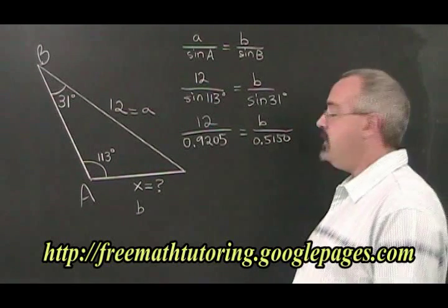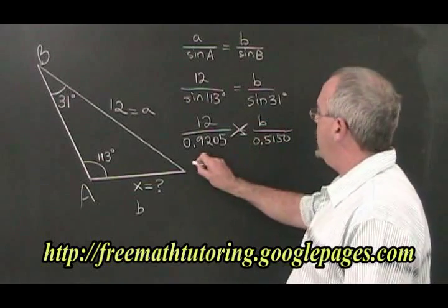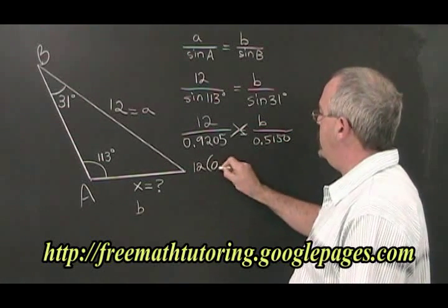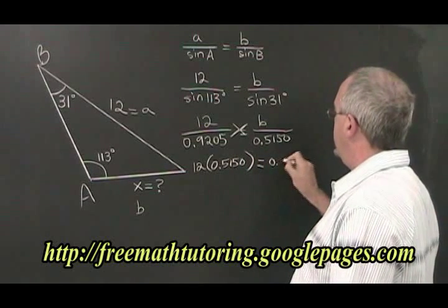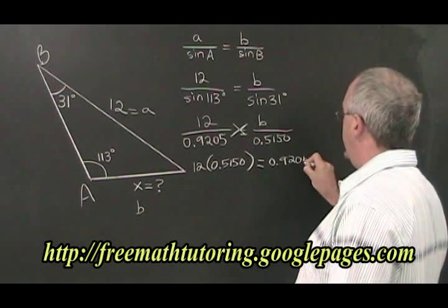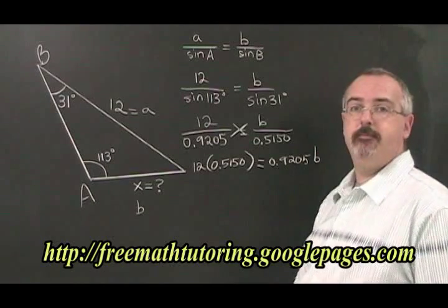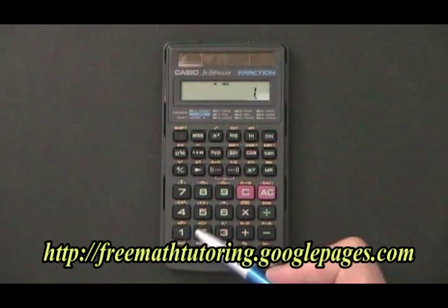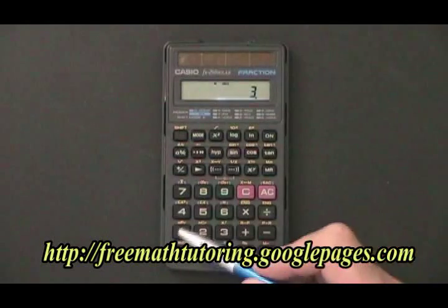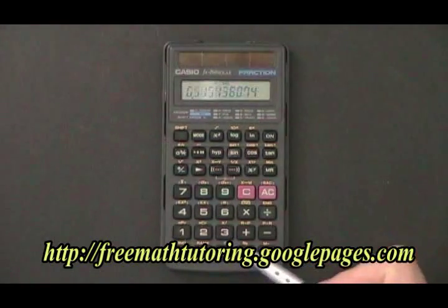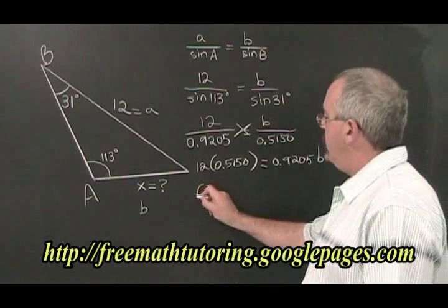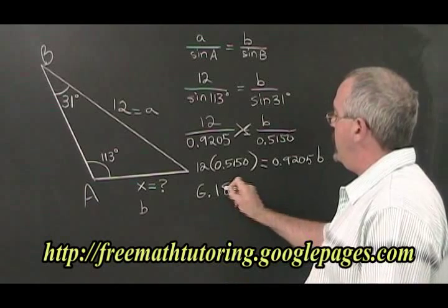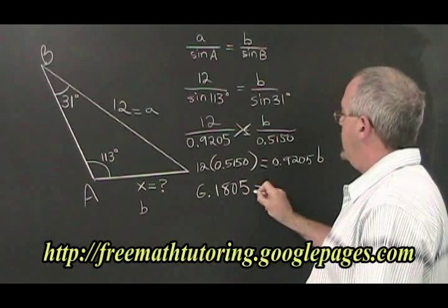Cross multiplying, we get 12 times 0.5150 is equal to 0.9205b. 12 times the sine of 31 is equal to 6.1805. This gets replaced by 6.1805 in our formula.